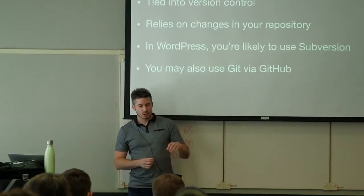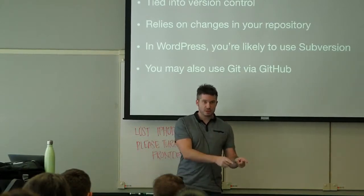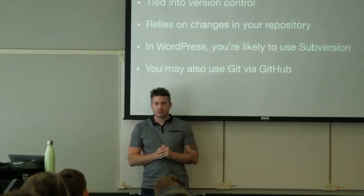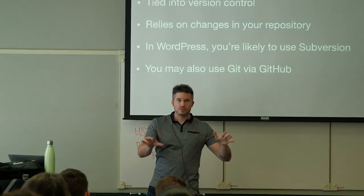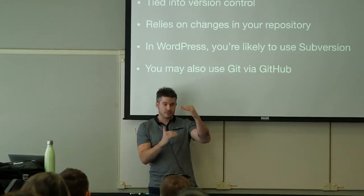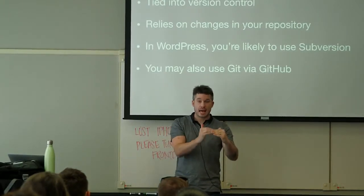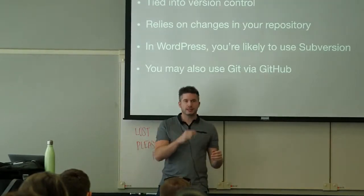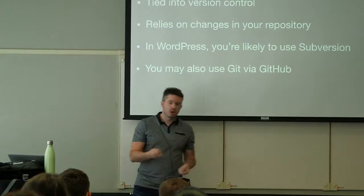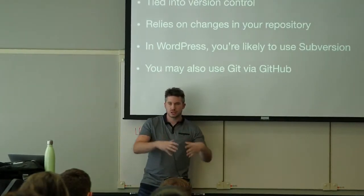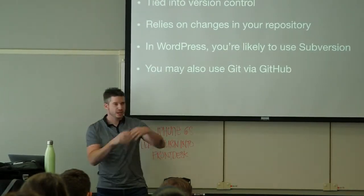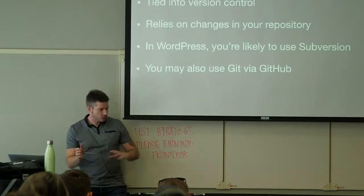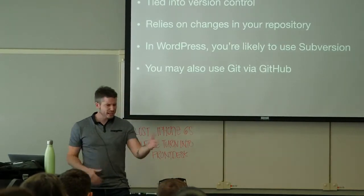What version control does: let's say you're working with Subversion. You say, hey Subversion, I've got a project in this directory — watch all the files in here. It will watch every single change you make to a file. So when you're ready to deploy, you see a nice list of the files you touched. Then you can say these are the files I need to deploy. In Subversion they call them tags — you create a tag, this is version 0.1.0, and you deploy that.